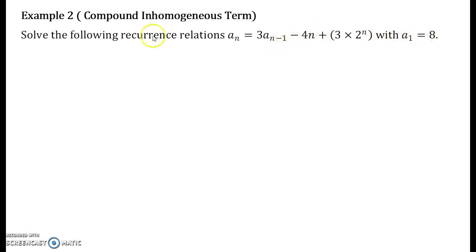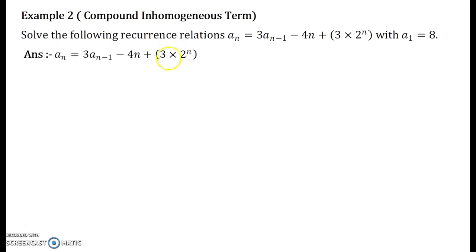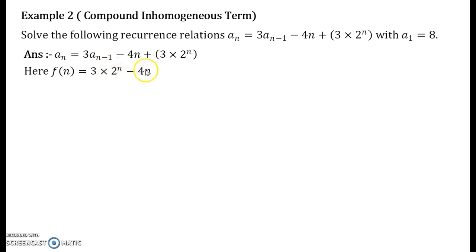The novelty of this question is the kind of function f(n) we have. Let us see how to tackle this kind of inhomogeneous recurrence relation. Consider the recurrence relation given and find the function f(n). I am writing here the function as 3·2^n minus 4n — I have just swapped the terms because it is easy to write it in this manner.